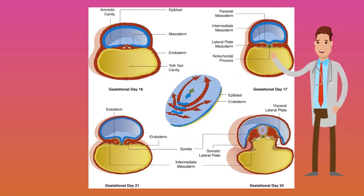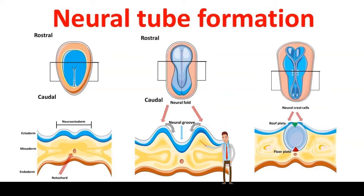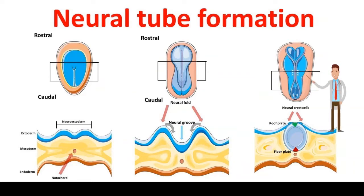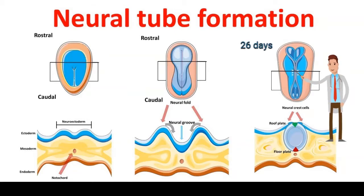The ectoderm will also differentiate into surface ectoderm and neuroectoderm. Surface ectoderm overlying the notochord will start to groove in to form the neuroectoderm. This begins as the neural groove, which will close centrally, then zip cranially before caudally by two days. At 26 days the neural tube is closed cranially, and at 28 days it will close caudally. Defect of closure will form a neural tube defect.